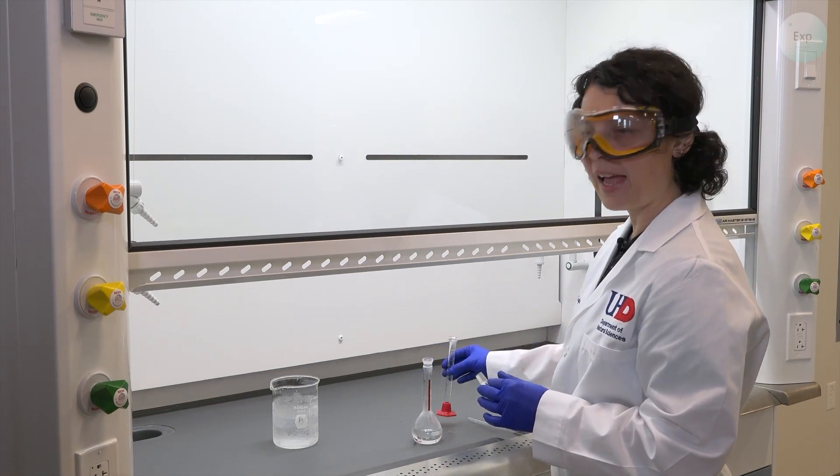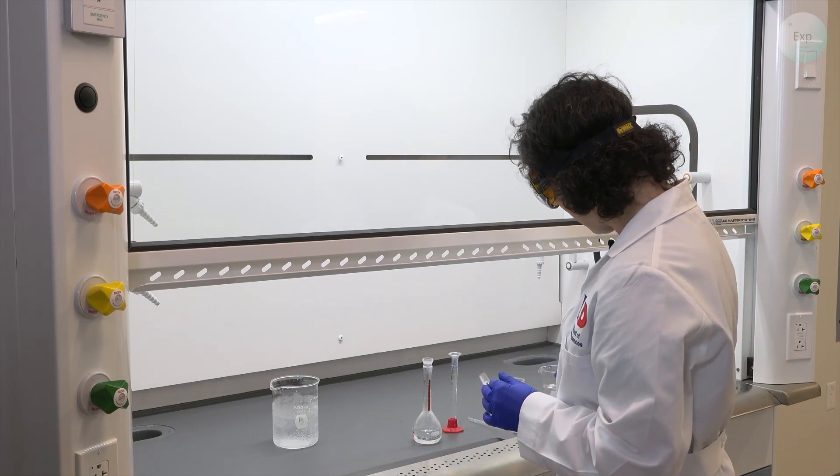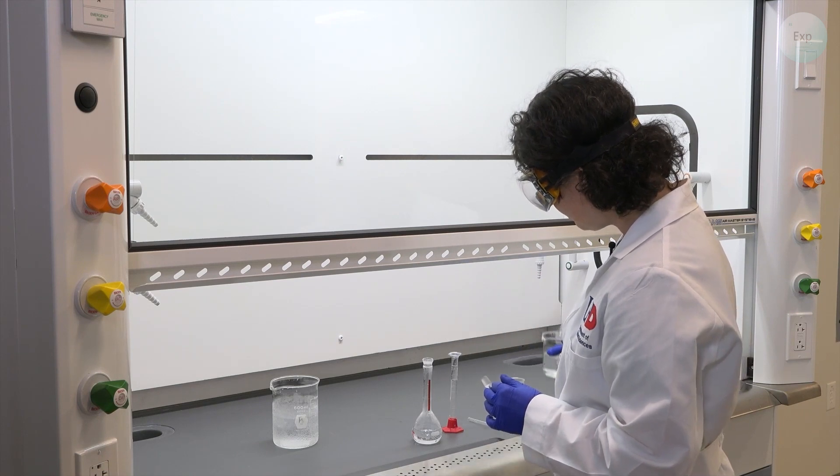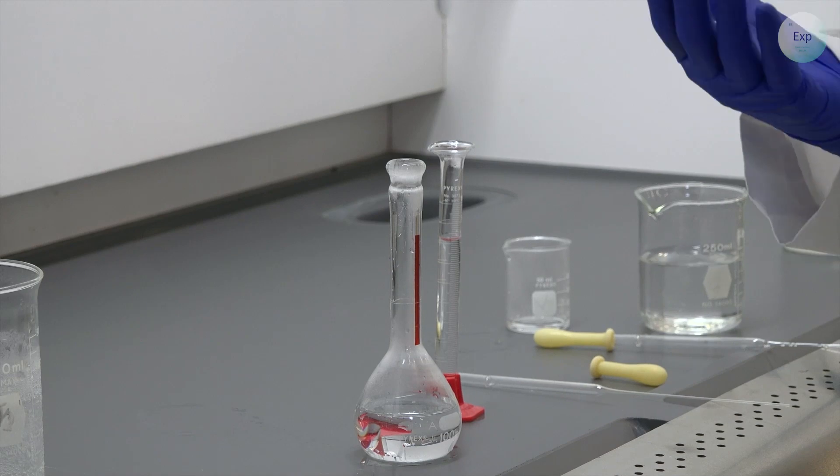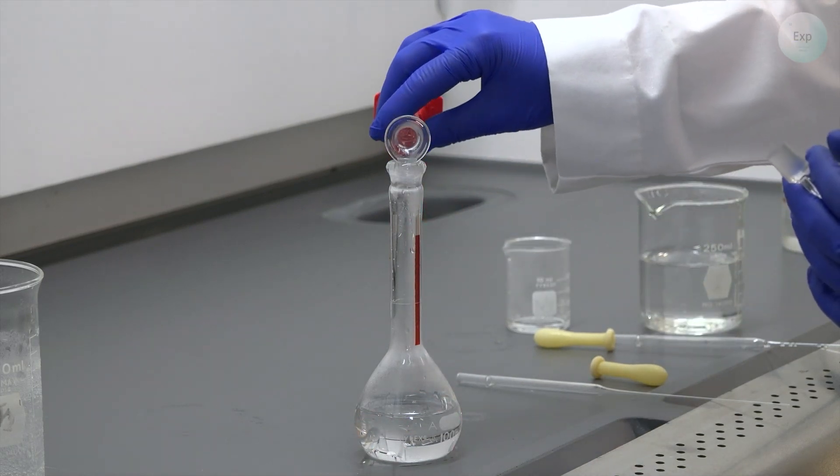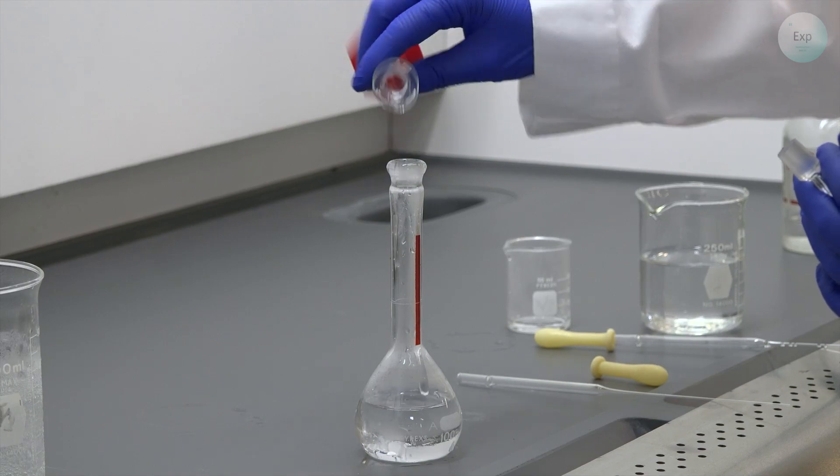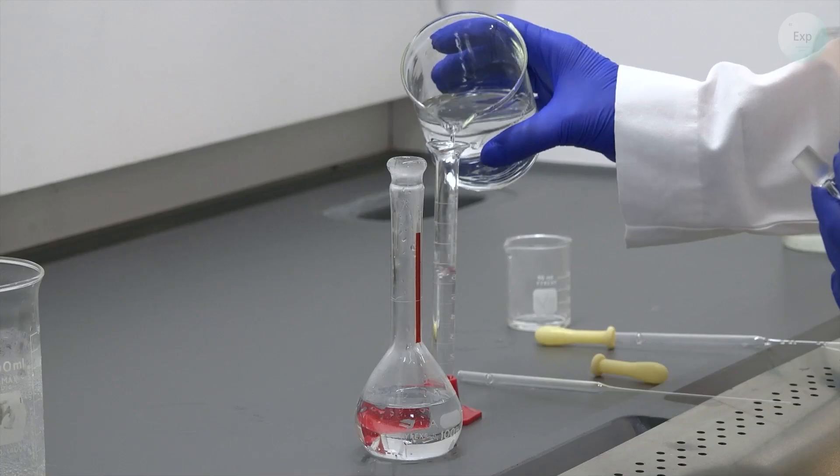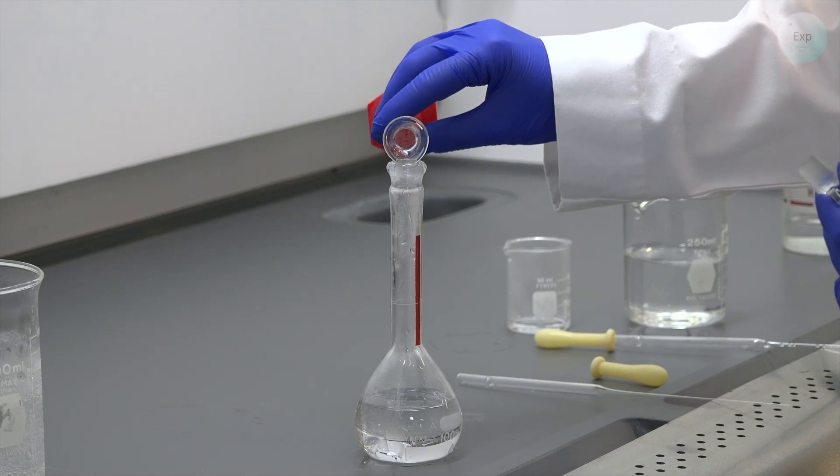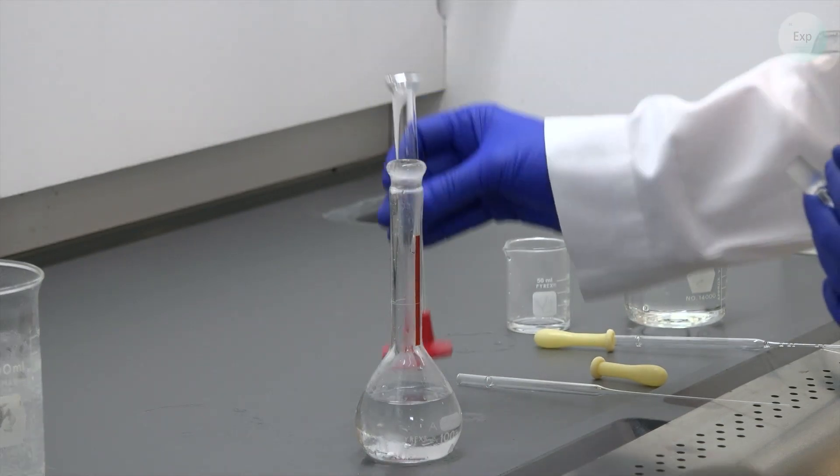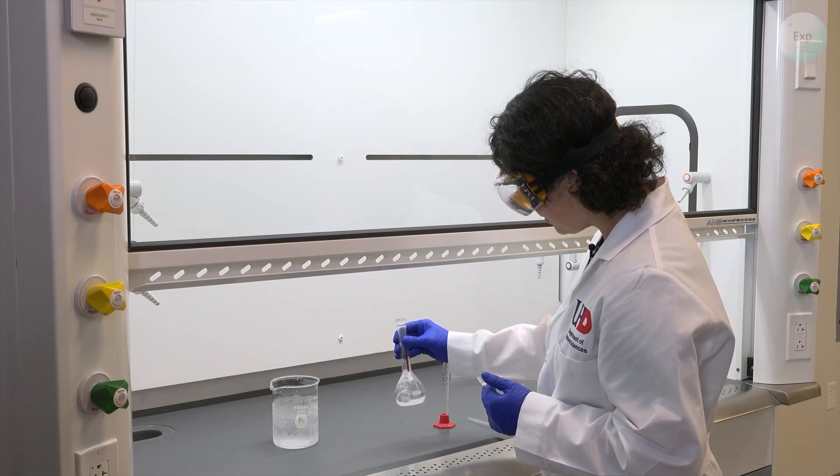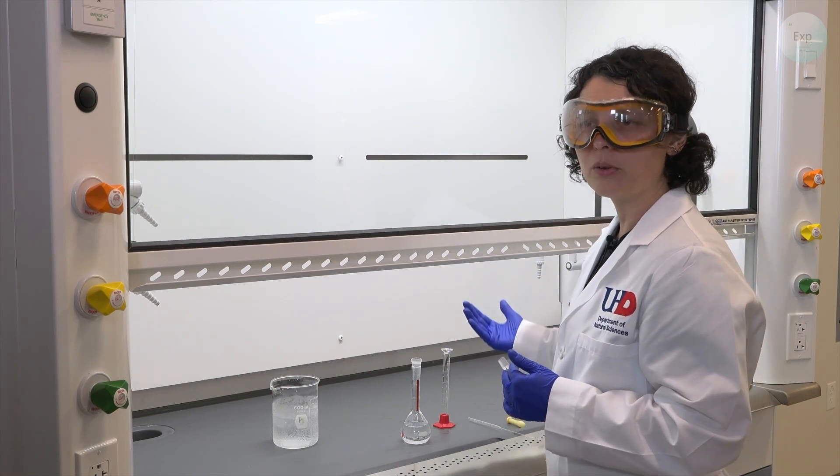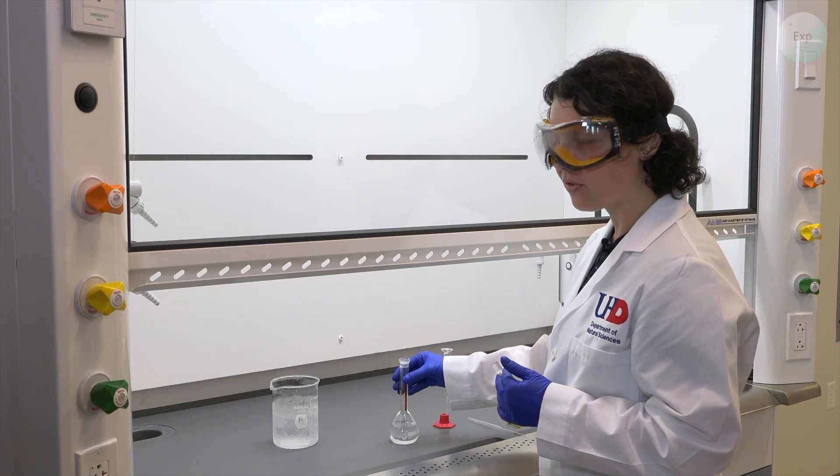Next, I want to ensure that all my hydrochloric acid has transferred. So I will add a small increment of deionized water into the graduated cylinder. It can be as small as you want it, and it can be as much as 10 milliliters. And we do this at least twice. So we have the solid acid successfully transferred into the volumetric flask.